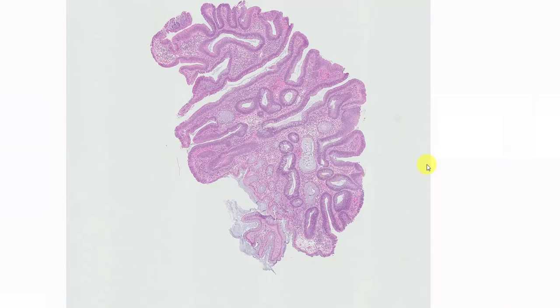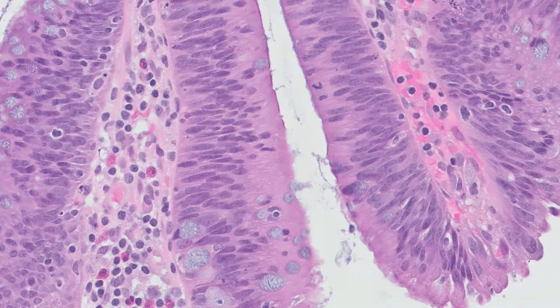And those are the two features I use on low power to make a diagnosis of a tubular adenoma. Then I go on high power. On high power, I'm looking for cells that are tall, dark — that means they're hyperchromatic — and they are stratified or pseudo-stratified.